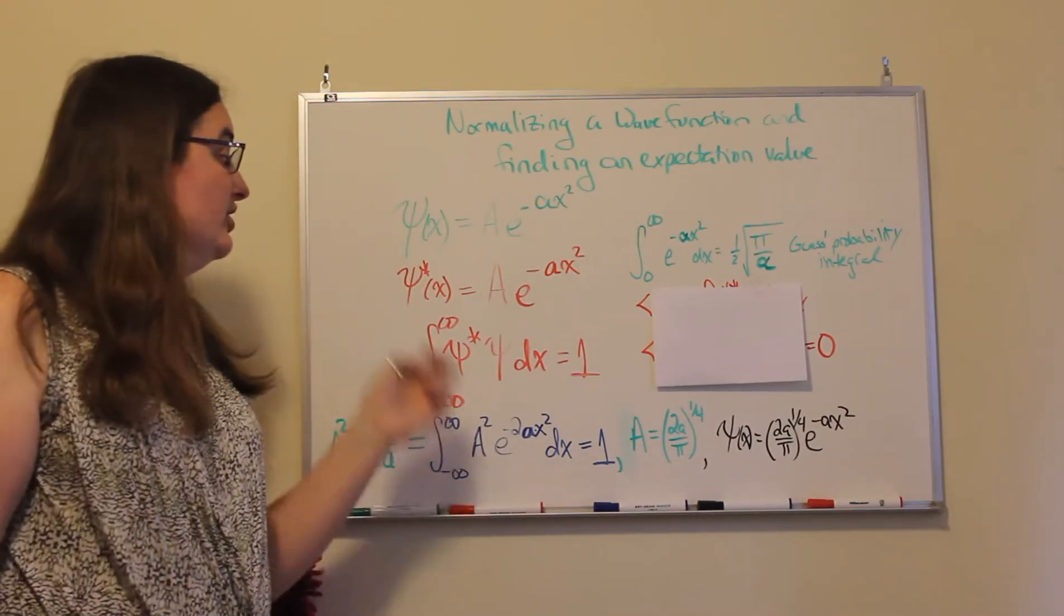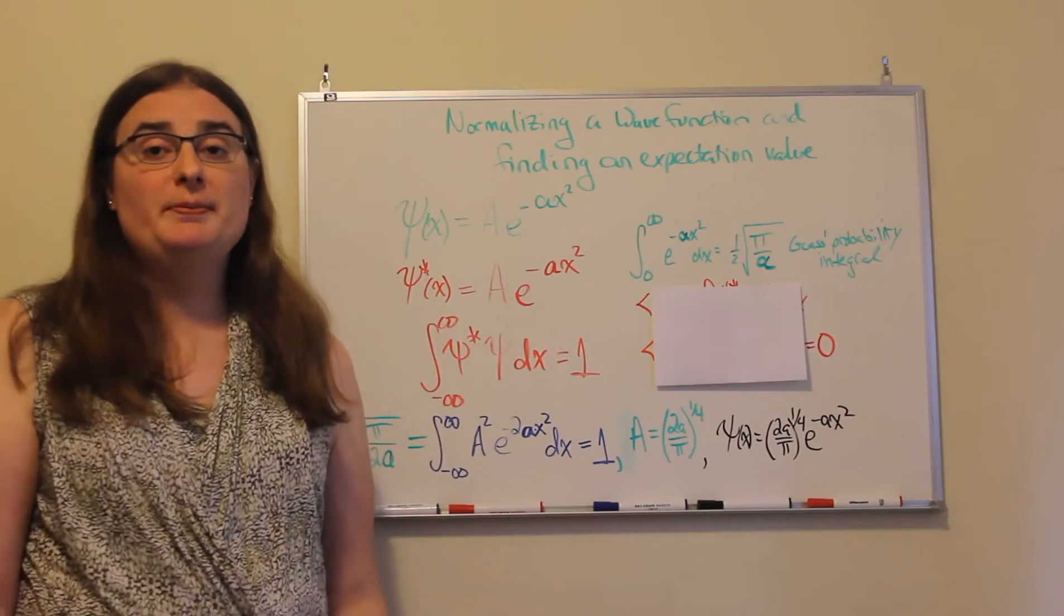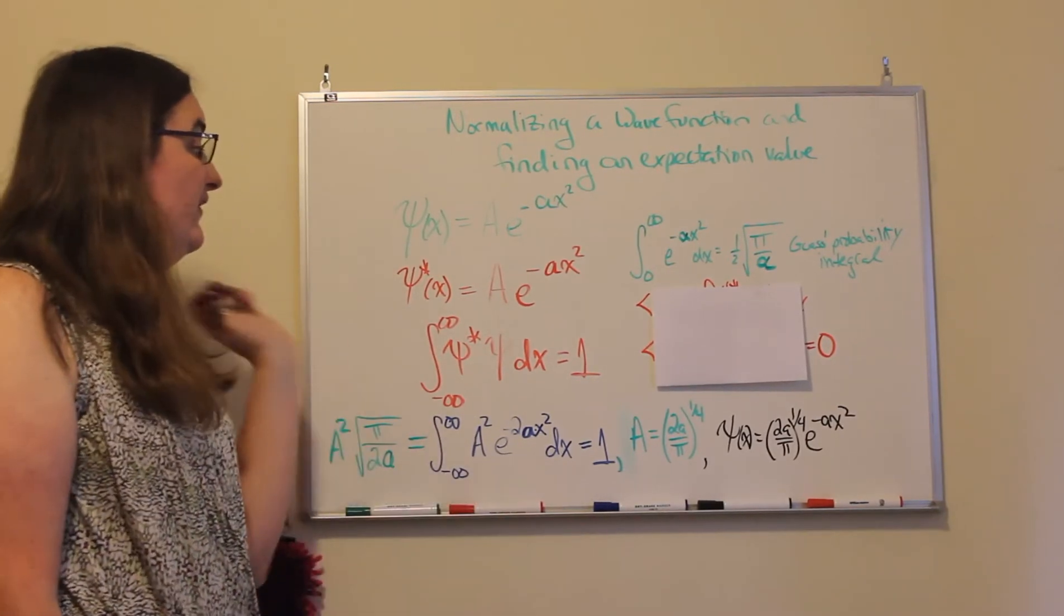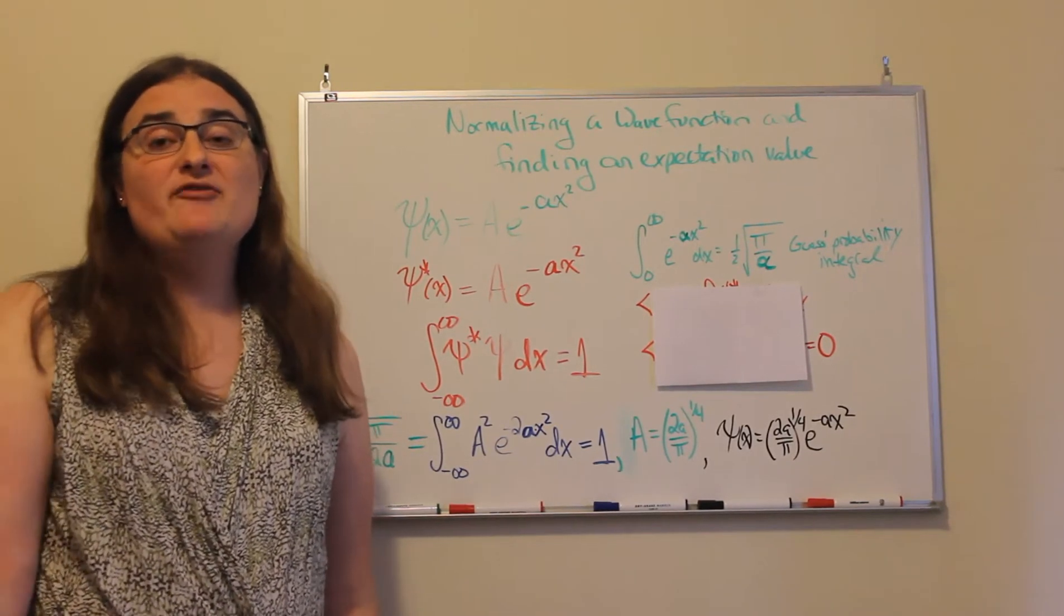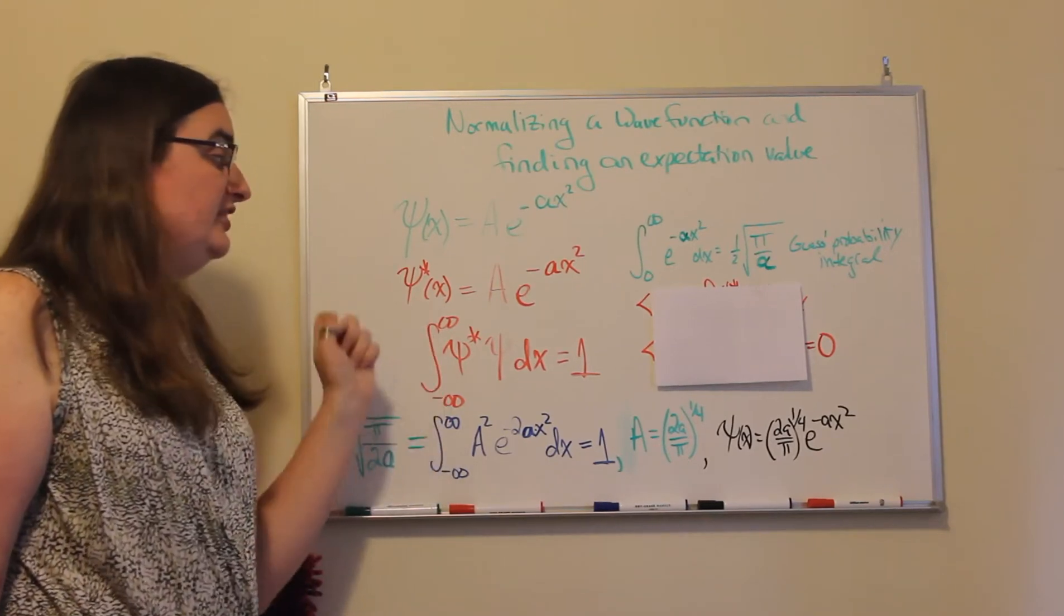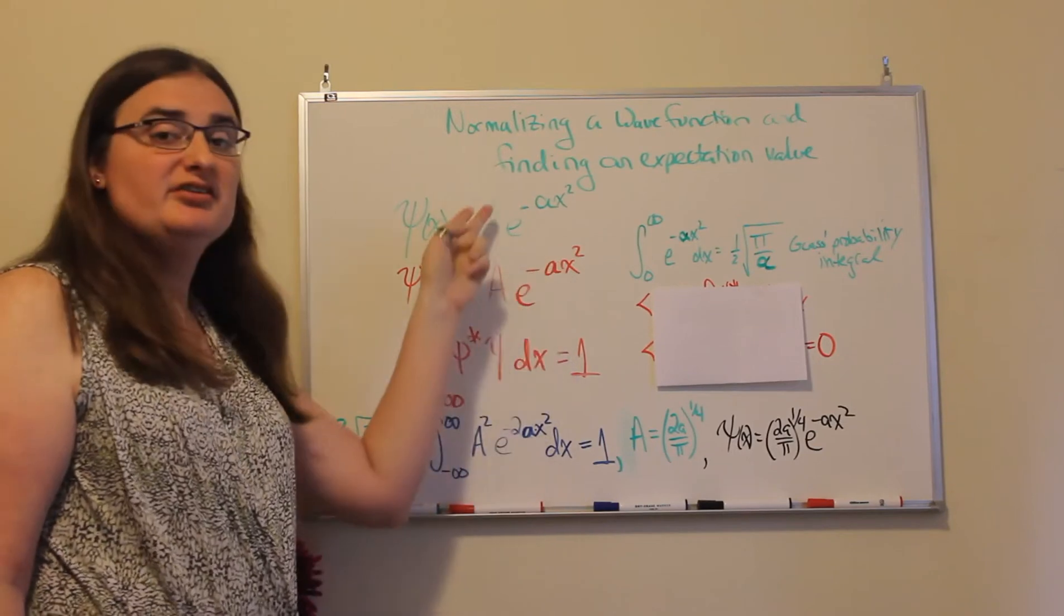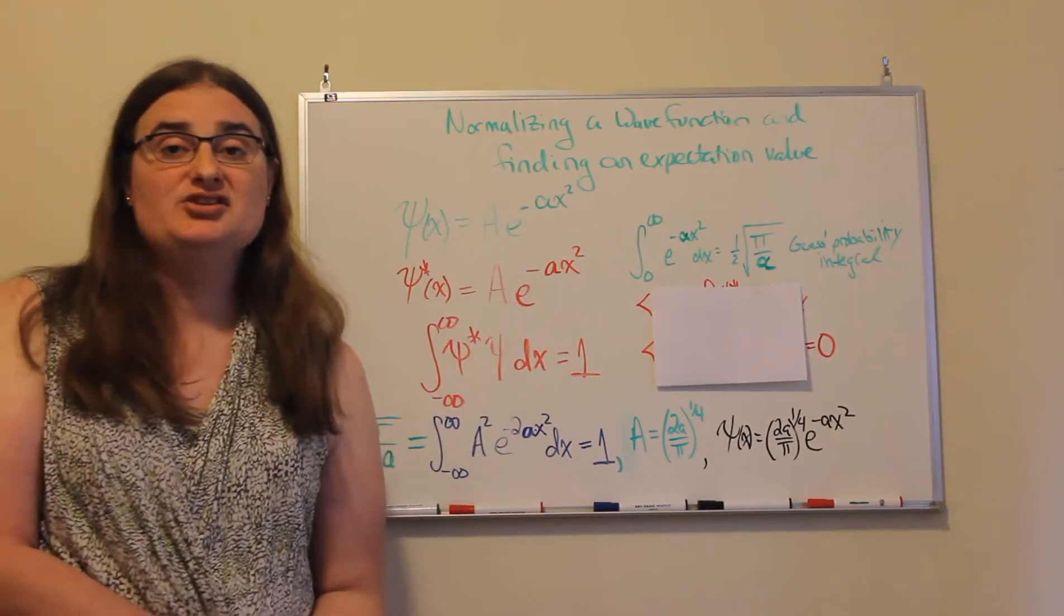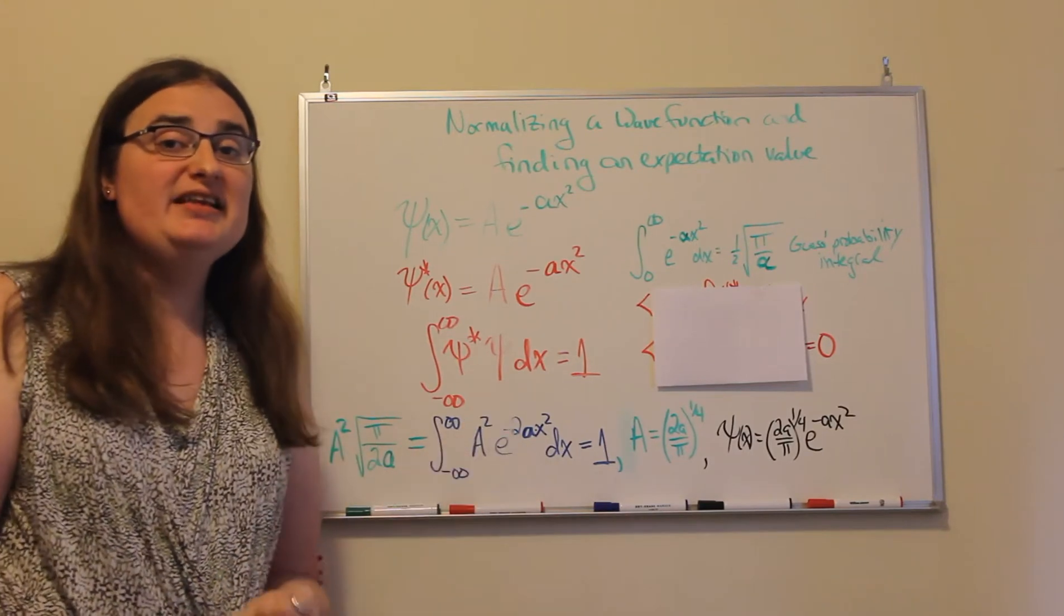So to normalize, we take the complex conjugate, multiply by our original probability wave function, and then we integrate over the entire region of space that that wave function occupies. So here we'd be going from minus infinity to infinity of ae to the minus ax squared times ae to the minus ax squared integrated with respect to dx, and we'd set that equal to one.